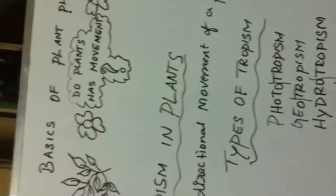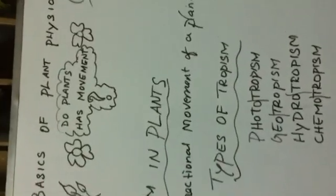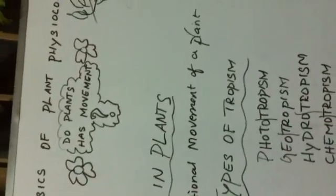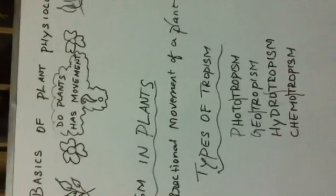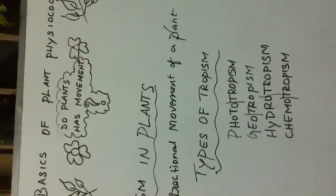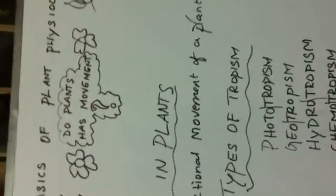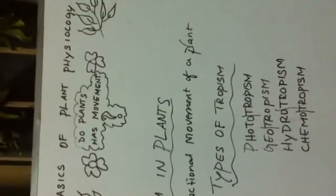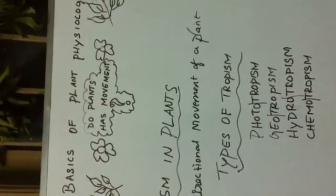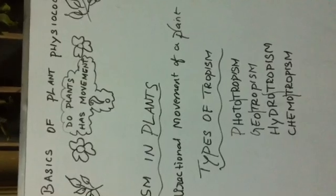So these are the types of tropisms. The movements of plants are of two types: tropic movements and nastic movements. Today we learned about tropic movements. The next video will be about nastic movements. Please do like, share, comment, and subscribe, and don't forget to click on the bell icon. Thank you so much for watching.